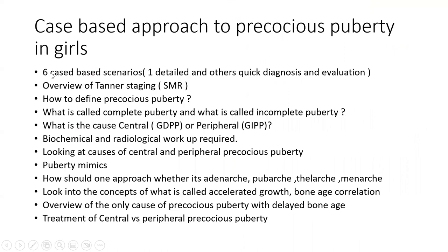In this session I'll be discussing six case-based scenarios. One will be a detailed scenario where I'll take you through the journey of evaluating, diagnosing, and managing a case of Precocious Puberty in a girl. I'll also discuss five other quick case-based scenarios, an overview of Tanner staging, and define what we consider Precocious Puberty in girls, covering complete versus incomplete puberty, central versus peripheral causes, biochemical and radiological workup, and different treatment options.